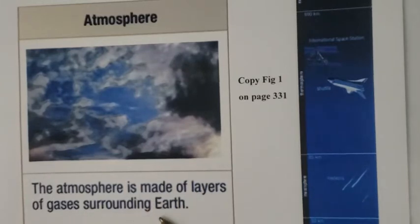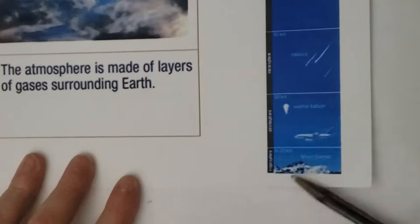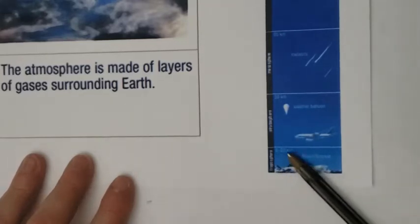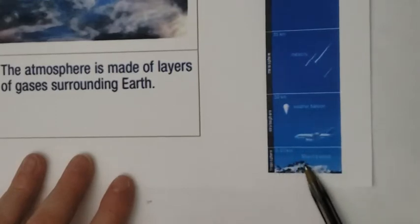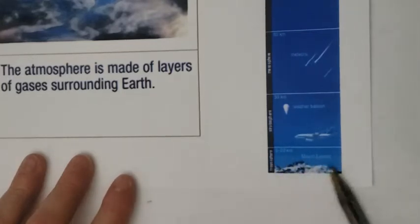Let's look at the atmosphere. The atmosphere is made up of layers of gases surrounding the Earth. There's a picture in your textbook on page 331, and I want you to copy it down. Starting at the very bottom, anywhere between 6 to 20 kilometers above the surface of the Earth — here's a picture of where 20 kilometers is, the top of Mount Everest, just to give you an idea — that's called the troposphere, the one closest to the surface of the Earth.